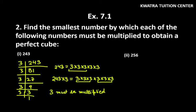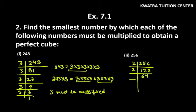Now let's get into the second part, that is 256. 256 will be divisible by 2. So 256 divided by 2, you will get 128. 128 divided by 2, you will get 64.